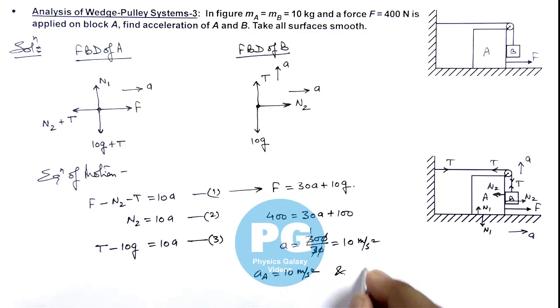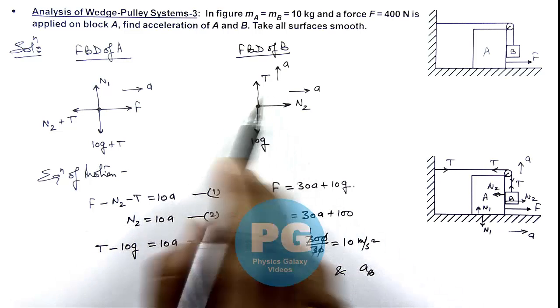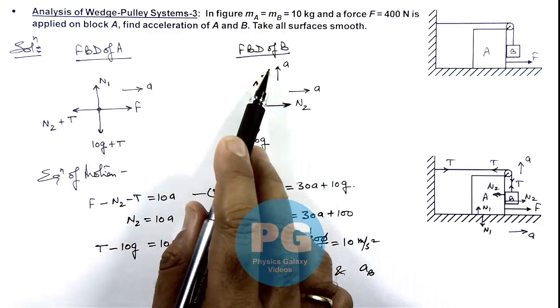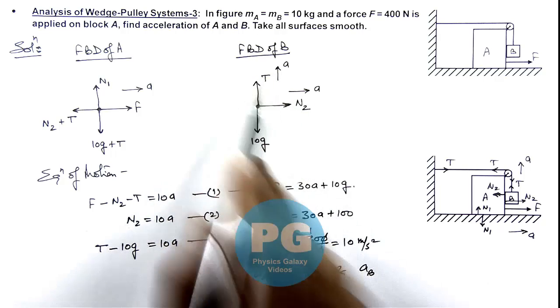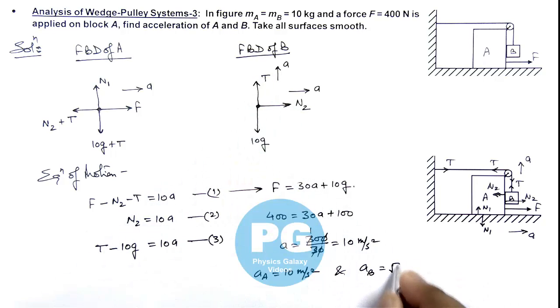And for block B here we can see it is moving toward right with acceleration a and going up with acceleration a. So its resulting acceleration will be root 2 a. So this will be 10 root 2 meter per second square so this is the final result of this problem.